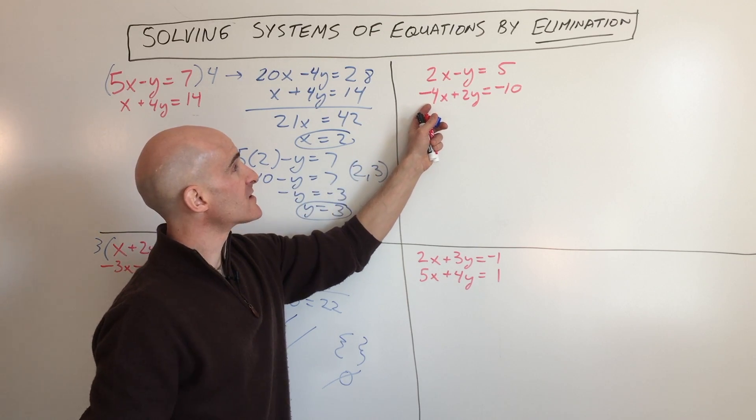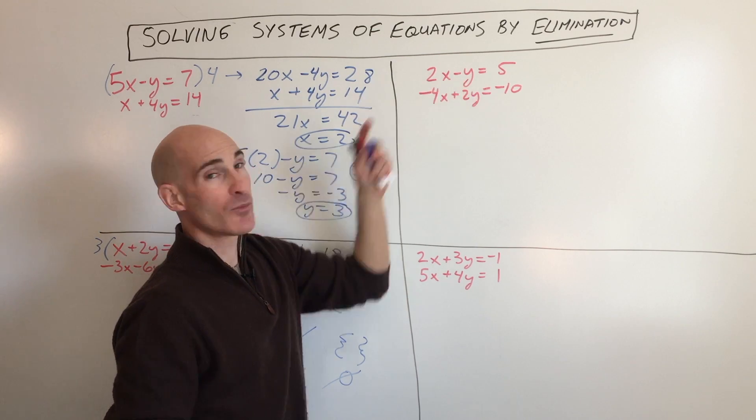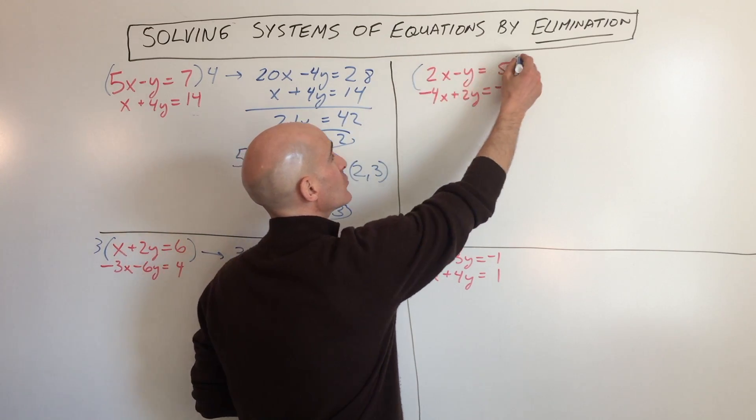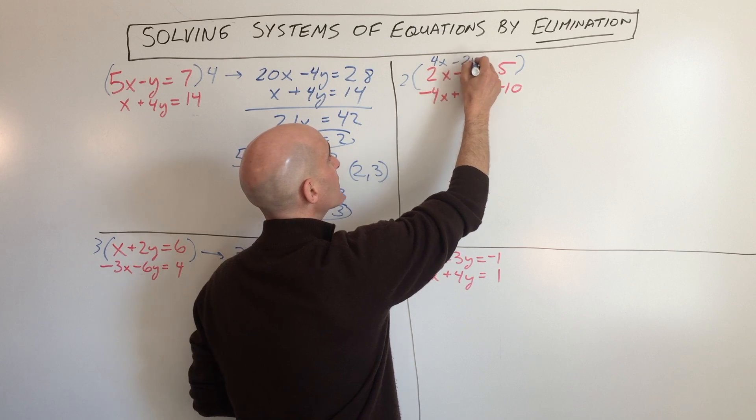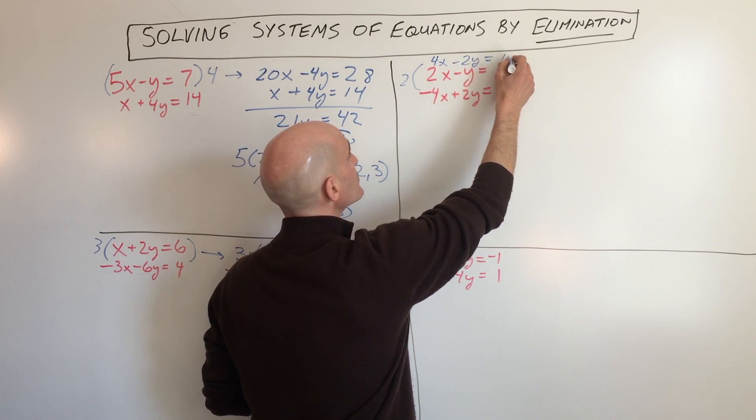Let's eliminate the y's. We're going to multiply the top equation times 2. So if we do that, we're going to get 4x minus 2y equals 10.